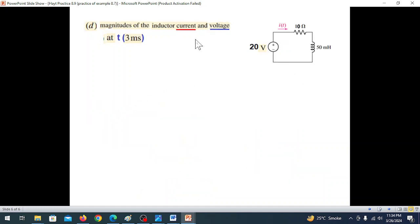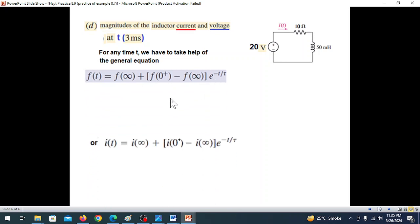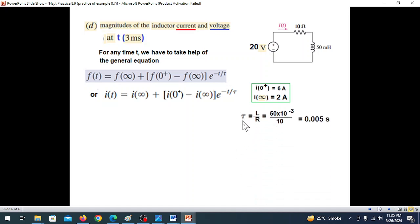Part (d): magnitude of current and voltage at t=3ms. For any time t, we use the general equation: i(t) = i(∞) + [i(0+) - i(∞)]e^(-t/τ). For an inductor circuit, τ = L/R = 50mH/10 = 0.005 seconds.